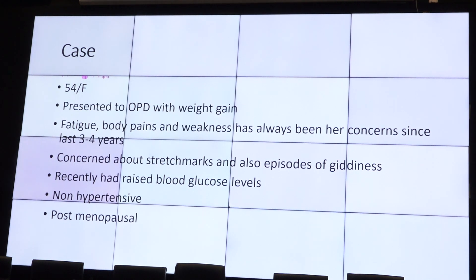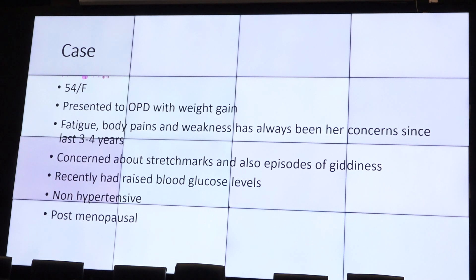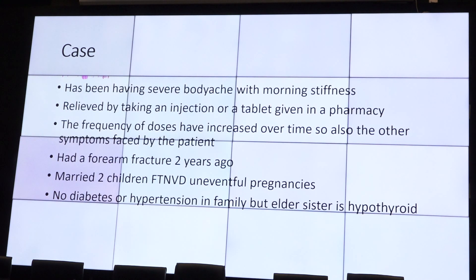Let's discuss one clinical case throughout the talk. A 54-year-old lady walked into the OPD saying she had pain, couldn't climb stairs, and I noted she couldn't even climb the examination table — severe proximal muscle weakness. She was gaining weight, had stretch marks on her tummy, mildly high glucose, and dizziness with her blood pressure always recorded low at a nearby clinic. She had symptoms of body pain, stiffness, tiredness, and every morning was a disaster. Her saviour was a pharmacist — she would go to the medical shop and get a particular tablet or injection.